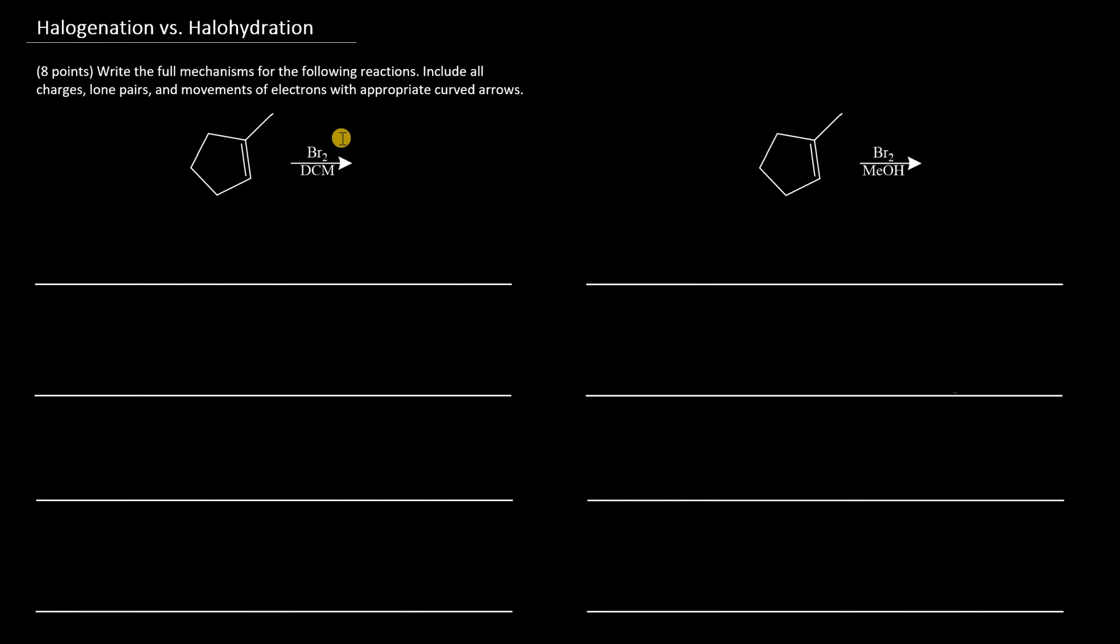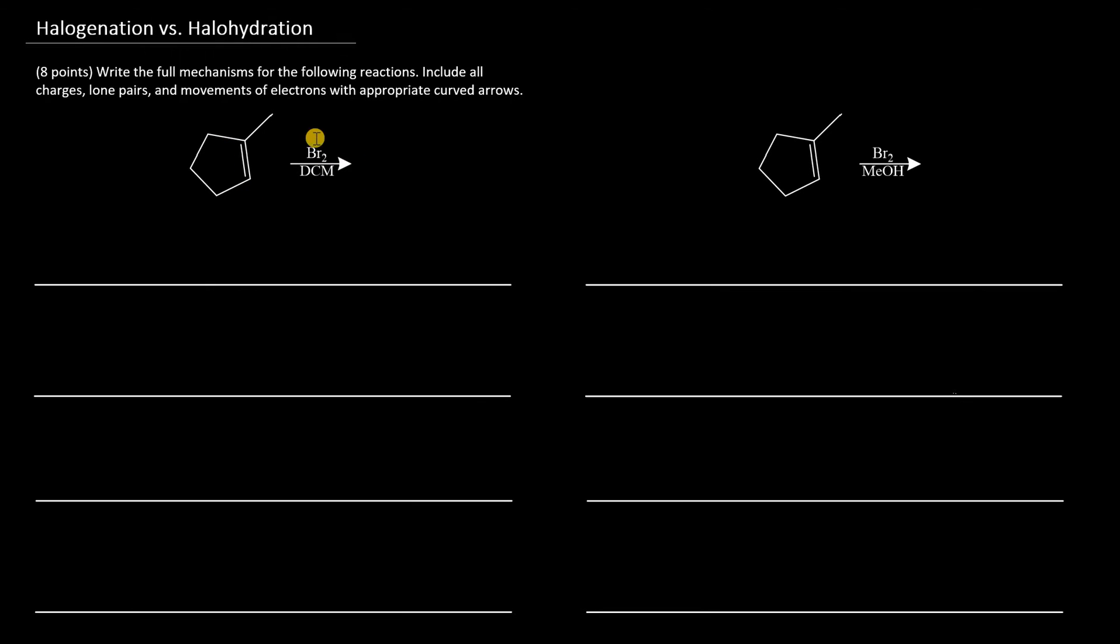In halogenation, we must use an inert solvent that doesn't interact with our reagent. A classic one which is commonly used is dichloromethane, which is also called methylene chloride.